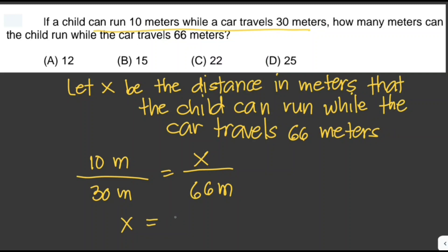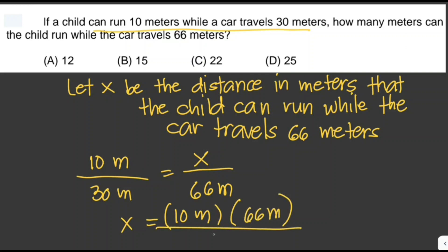We cross multiply to solve for x: x equals 10 meters times 66 meters divided by 30 meters, which equals 22 meters. Therefore the answer is letter C.